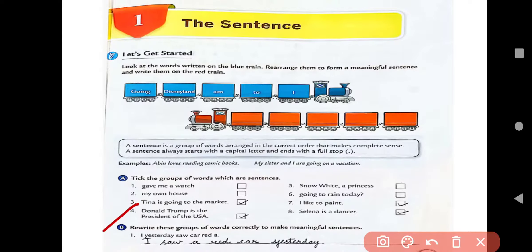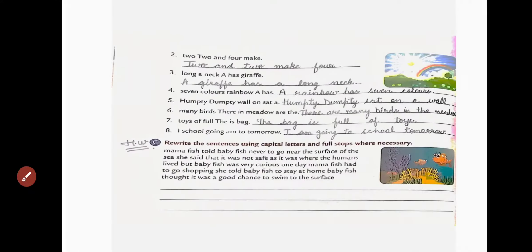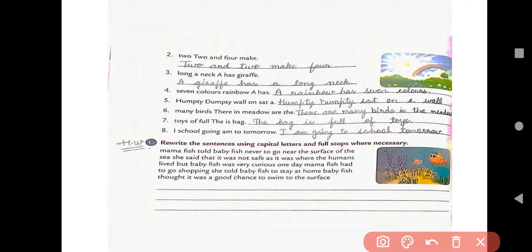Now, come to the B exercise. Rewrite this group of words correctly to make meaningful sentence. First one we have, I yesterday saw car red A. So, sentence will be, I saw a red car yesterday. Now, come to the next page. Here, the second one we have, To, to and for me. Sentence will be, Two and two make four. Next, Long a neck has giraffe. Yes, a giraffe has a long neck.